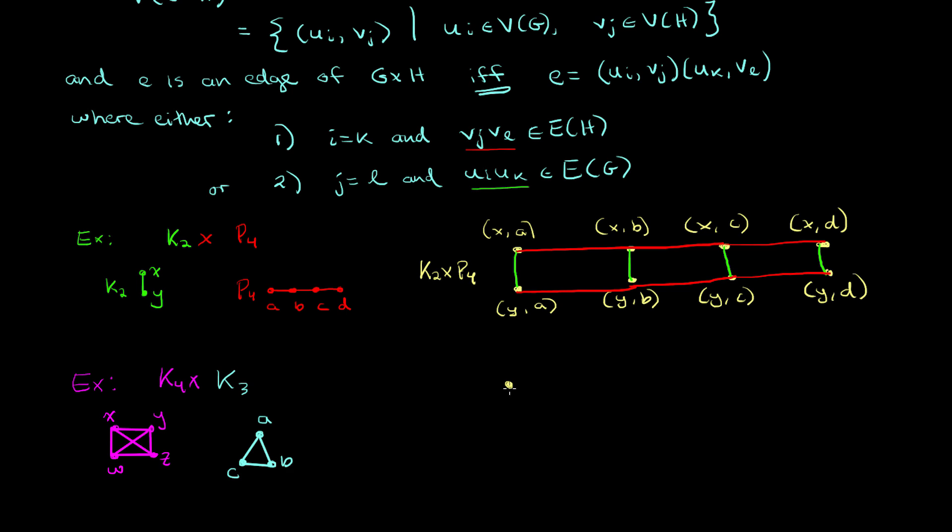Now what we want to do is draw out all of the vertices of our new graph, which is the Cartesian product. And instead of writing out vertices as ordered pairs, I'm just going to use a shorthand where xa really denotes the ordered pair (x, a). So now we have all of our vertices and we need to figure out the edges.